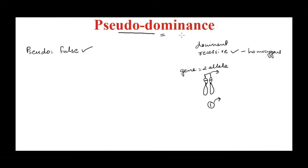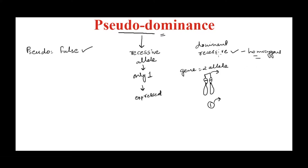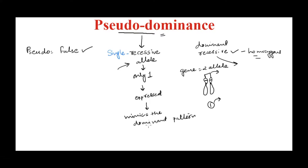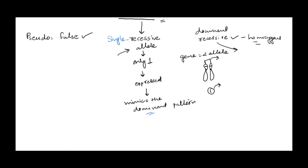So what exactly is pseudo dominance? Pseudo dominance is a condition where only one copy of a recessive allele is present but it is getting expressed. Normally, a homozygous recessive condition is required to see the phenotype of a recessive allele, but in pseudo dominance only one recessive allele is getting expressed — it mimics the dominant pattern.